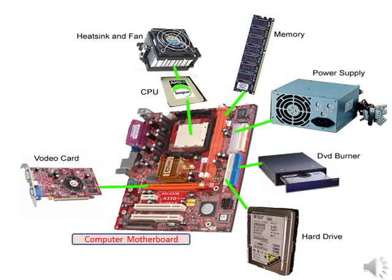The video card is used in the monitor. The CPU is a central processing unit. The computer brain is used in the CPU. Any logical processing is used in the CPU.